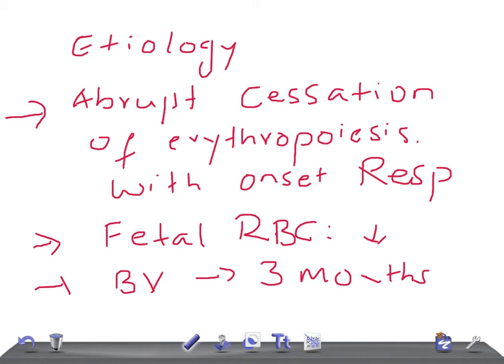To summarize, the three causes of physiologic anemia of infancy are: abrupt cessation of erythropoiesis with the onset of respiration, decreased fetal RBC lifespan, and expansion of blood volume in the first three months. The pathophysiology is essentially a physiologic adaptation to extrauterine life — the body adjusting to life outside the womb.